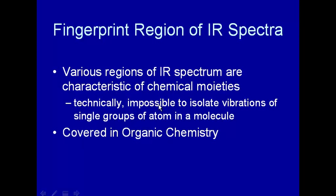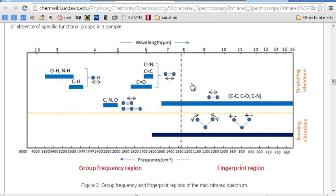Infrared spectroscopy is useful in identifying organic and other compounds. The reason is that the various regions of an infrared spectrum are characteristic of various chemical parts. Let's take a look at what we mean by that.